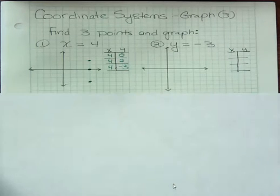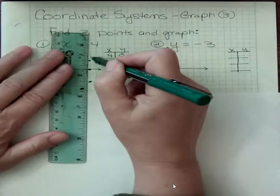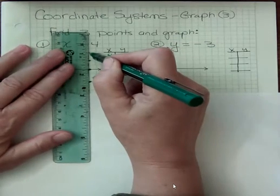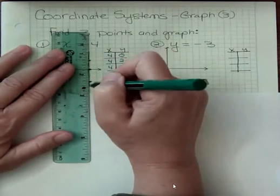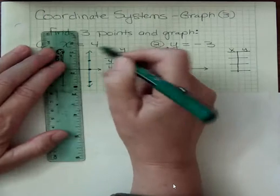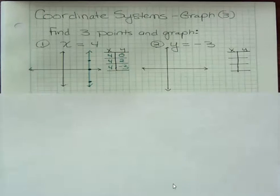It doesn't matter what y is. x is the thing here, and x is always 4. So I end up with a vertical line at 4. That's what happens. You get a vertical line every time you get x equals k, k being some number.